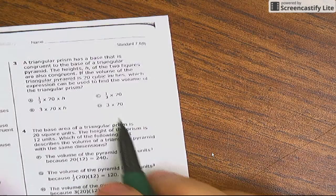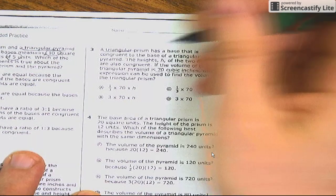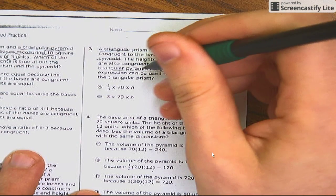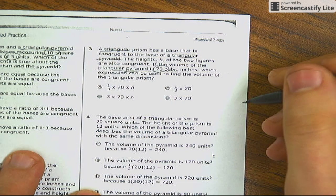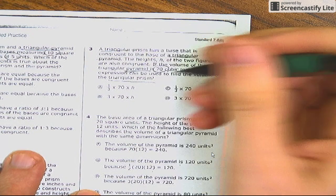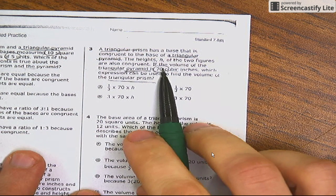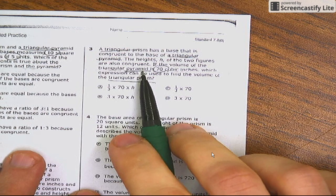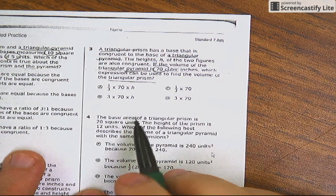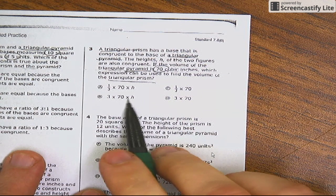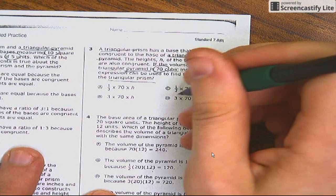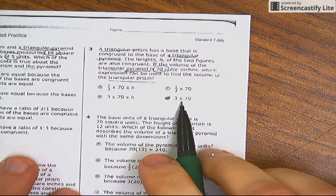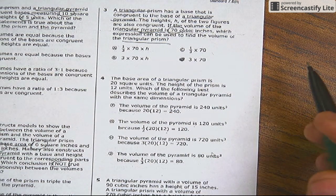All right, we can do one more. A triangular prism has a base that is congruent to the base of a triangular pyramid. Their heights of the two figures are also congruent. Perfect. If the volume of the triangular pyramid is 70, which expression can be used to find the volume of the triangular prism? So you've got to remember, are we dividing this by three? Are we multiplying it by three? To get from a pyramid to a prism, you have to multiply by three. All right, so it's going to be three times—it's not going to be times the height, you already have that. It's just going to be three times 70. The volume of the pyramid is 70, so the volume of the prism involves three of them put together. All right, you know what? I'll shoot through these because these aren't too bad at all.